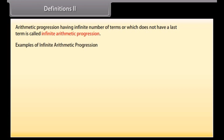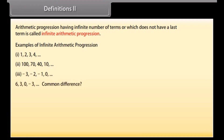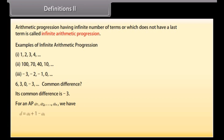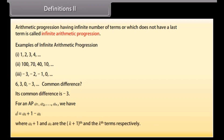Here are some examples of infinite arithmetic progressions. Look at this sequence — can you tell its common difference? Yes, its common difference is minus 3. In general, for an AP A1, A2, and so on till AN, we have D equal to A(k+1) minus Ak, where A(k+1) and Ak are the (k+1)th and kth terms respectively.